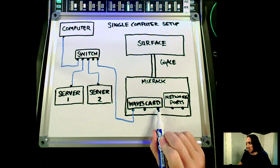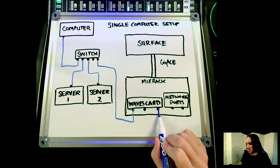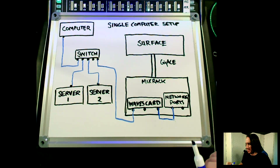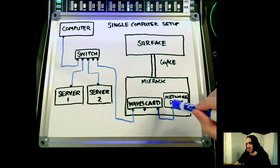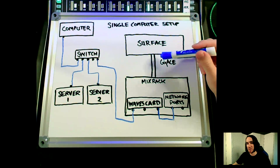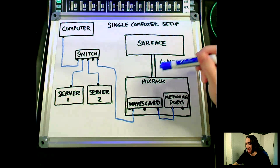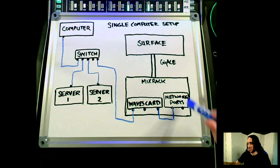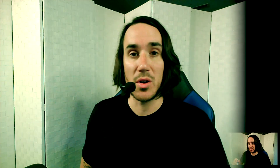Now we're going to do a bridge in order to get our scene control. Take one of the ports on the Waves card and make a bridge over to the network port on your mix rack. You can also make these connections on the surface — the surface generally has one or two ports for cards and also generally two network ports as well, so this same connection can be made on the surface.